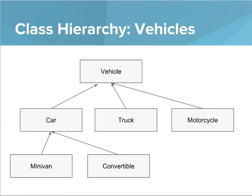Along those lines, we can think about organizing our classes into hierarchies. Here's a hierarchy that represents vehicles. A vehicle might be the most general type, but then there are different types of vehicles. You could talk about a car, a truck, or a motorcycle — those are all vehicles. But then within car, there are specific types of cars. You could have a minivan, you could have a convertible, and you can keep doing this. These diagrams show how some classes relate to others.